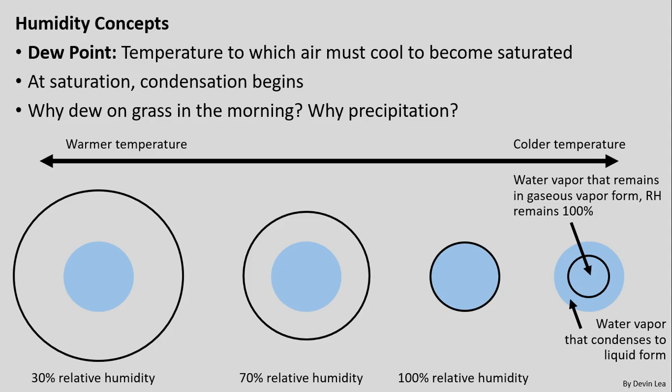Showing this visually: once we reach saturation, that is when we start to see condensation, and that is when we see things like precipitation. This is also tied to dew on the grass in the morning. When we have precipitation events, if we track from warmer temperatures on the left to colder temperatures on the right, we're showing the capacity to hold water vapor shrinking as temperature decreases.